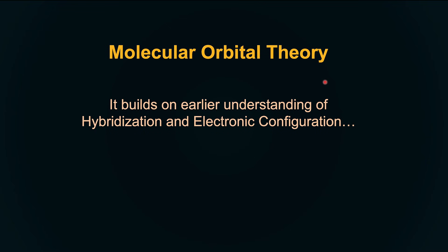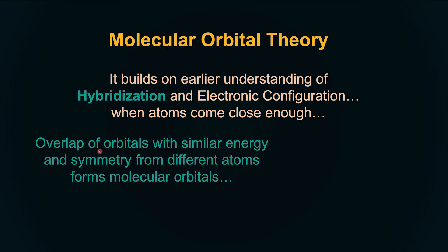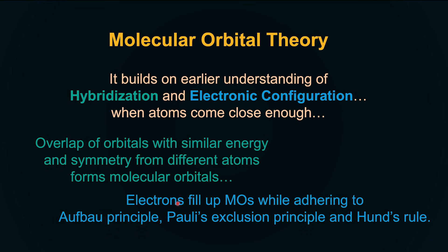Molecular orbital theory focuses on electron energy and distribution, giving a sense of shape, bond order, and all of those things. It's all driven by a search for lower energy, more stable arrangement. This builds on earlier understanding — the idea that there is an overlap of wave functions, but now we're talking about overlap of orbitals with similar energy and symmetry from different atoms, which form molecular orbitals. All electrons across all atoms in the molecule fill up molecular orbitals, and the Aufbau principle, Pauli's exclusion principle, and Hund's rule all apply.